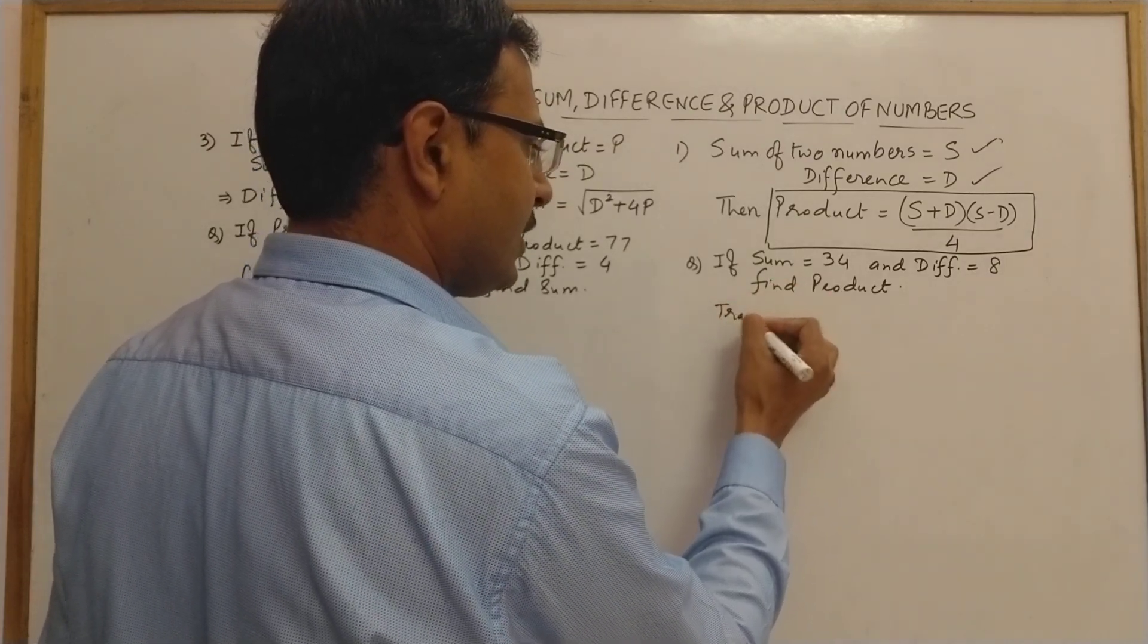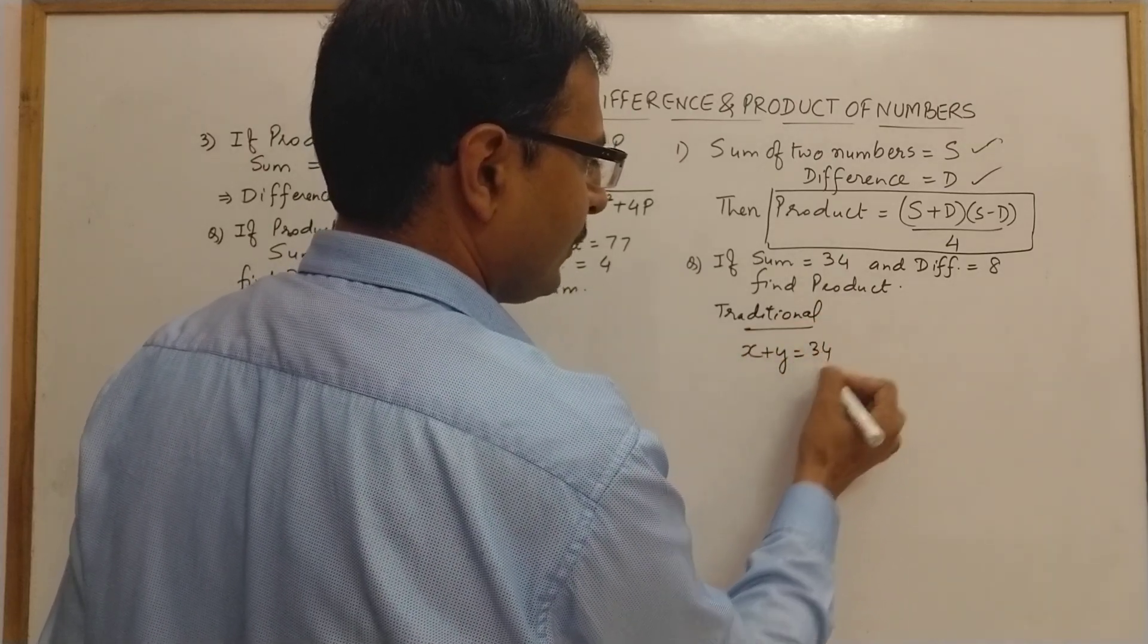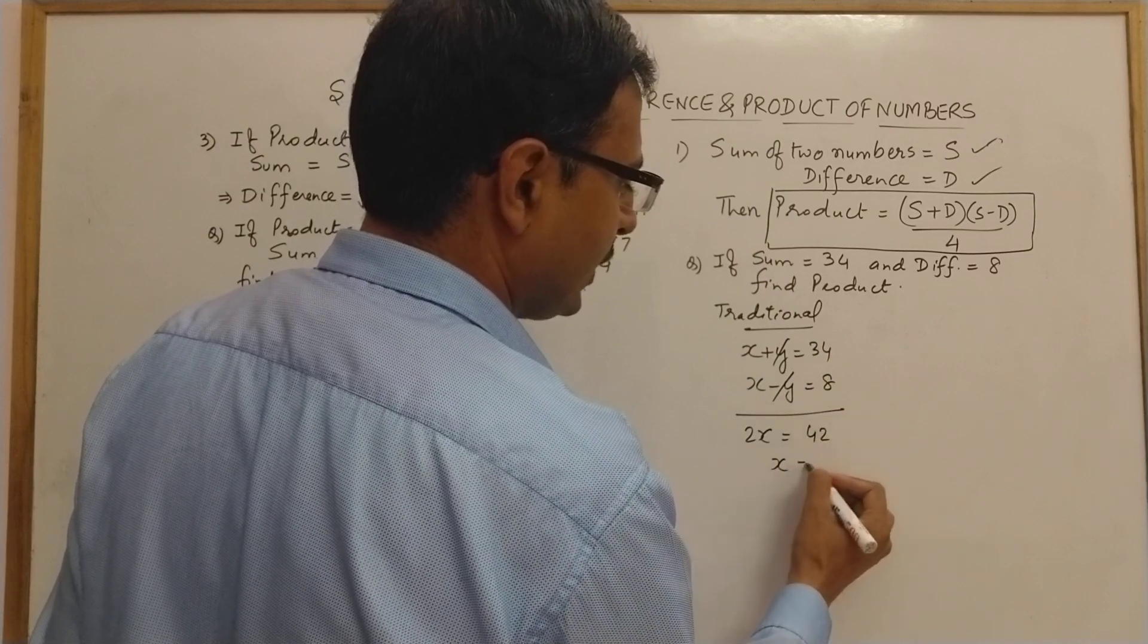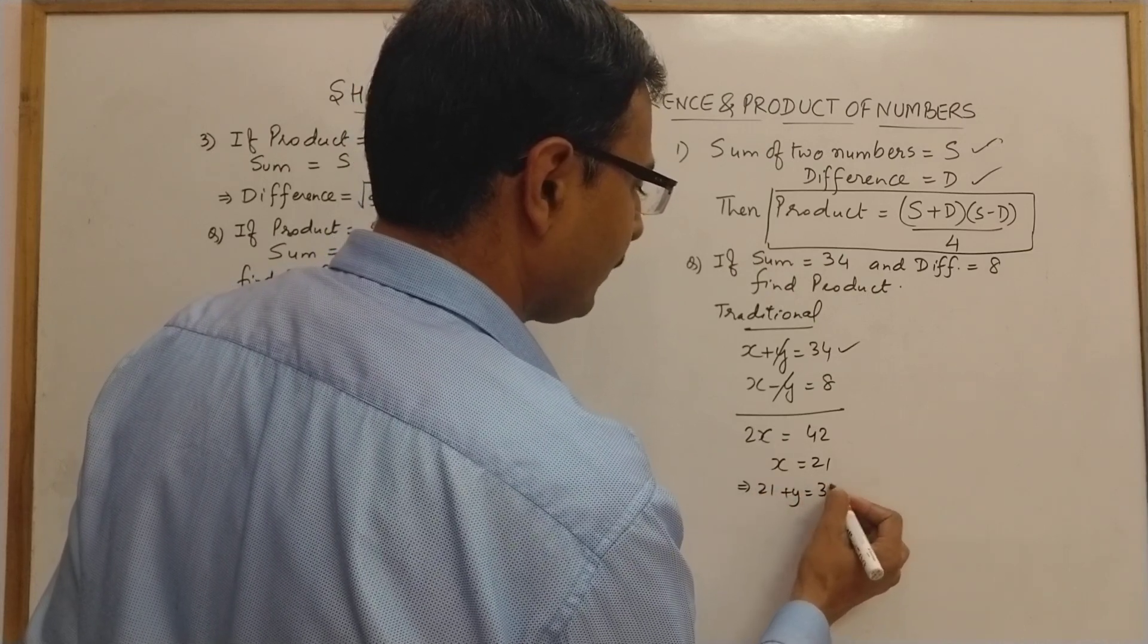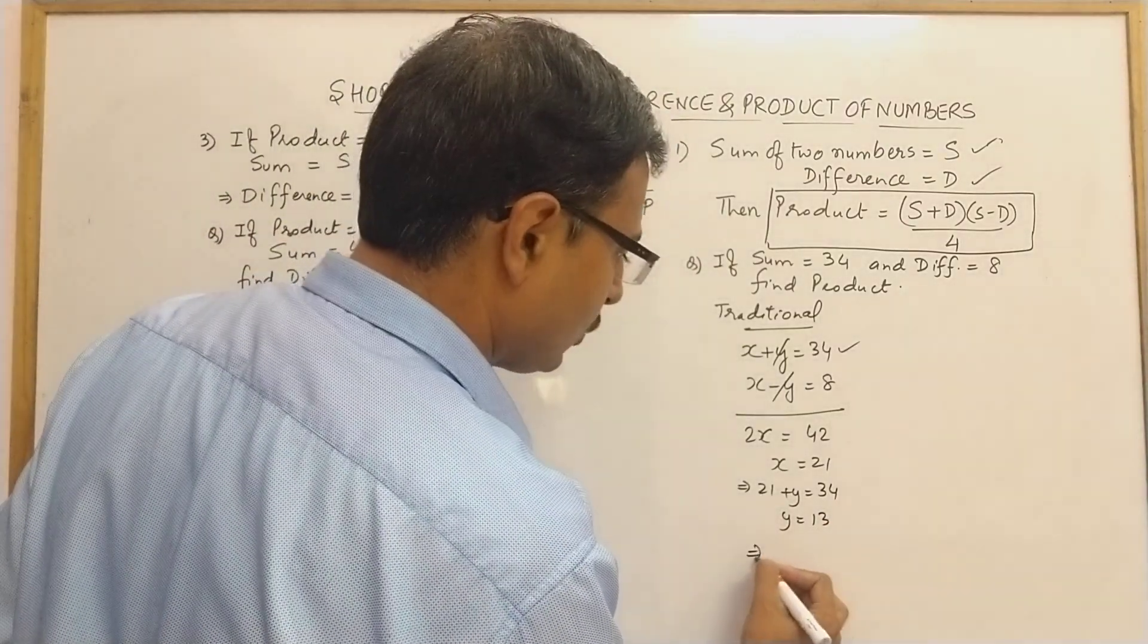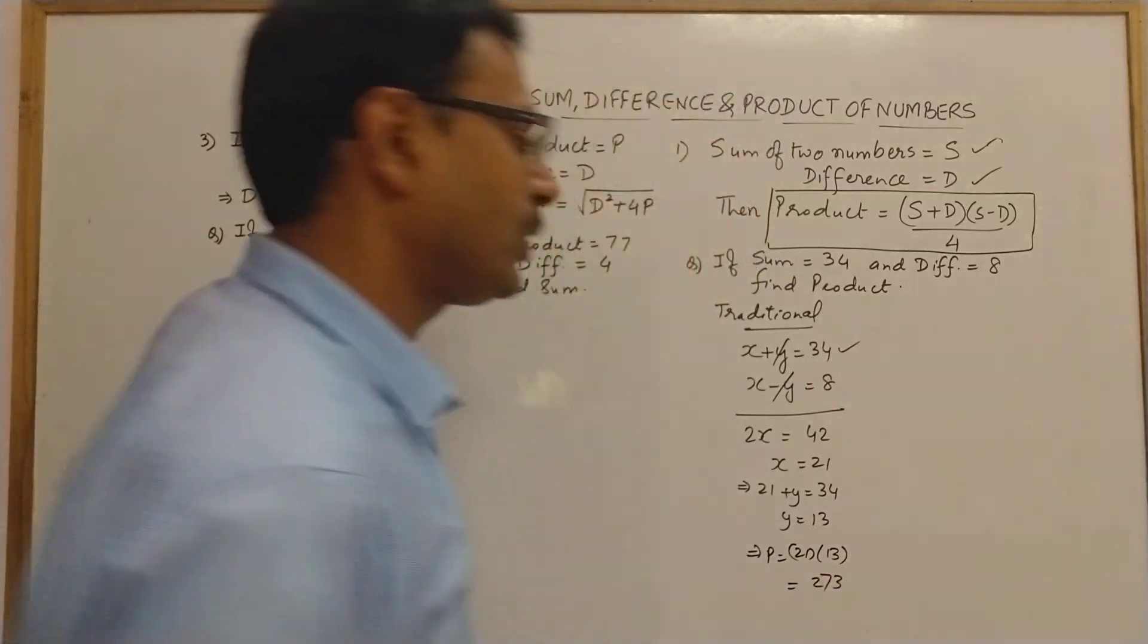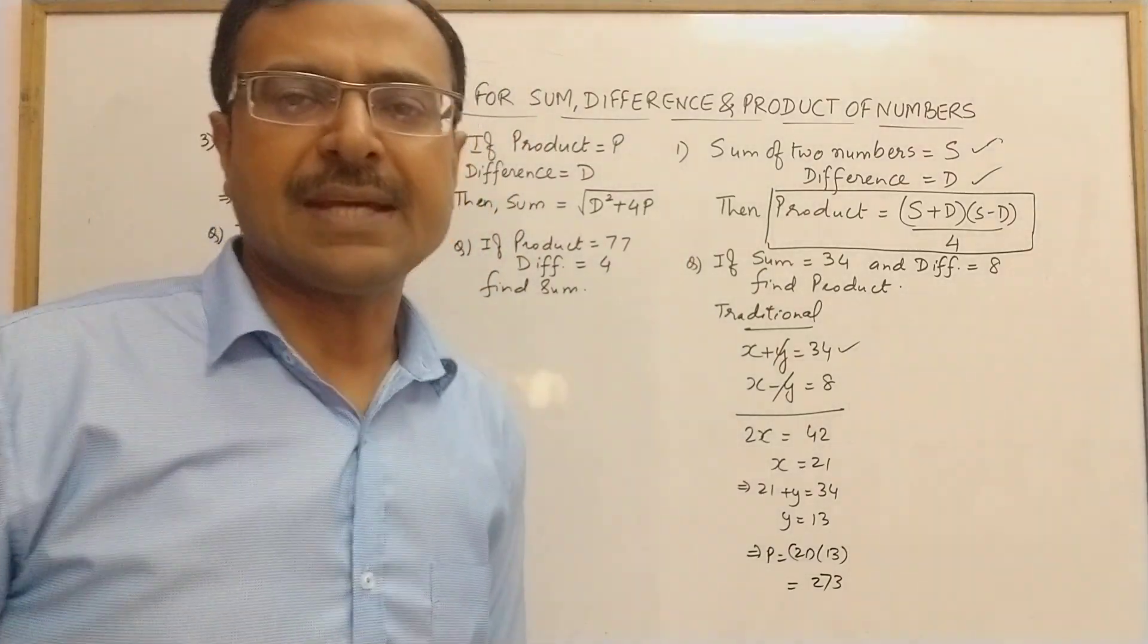The sum is 34 and difference is 8. Adding them gives 2x=42, so x=21. Substituting gives 21+y=34, so y=13. The product is 21×13=273. This traditional method takes 25 to 30 seconds.